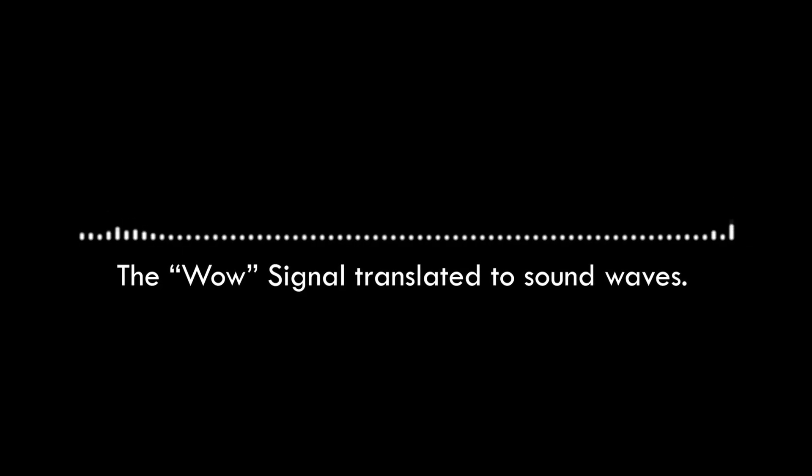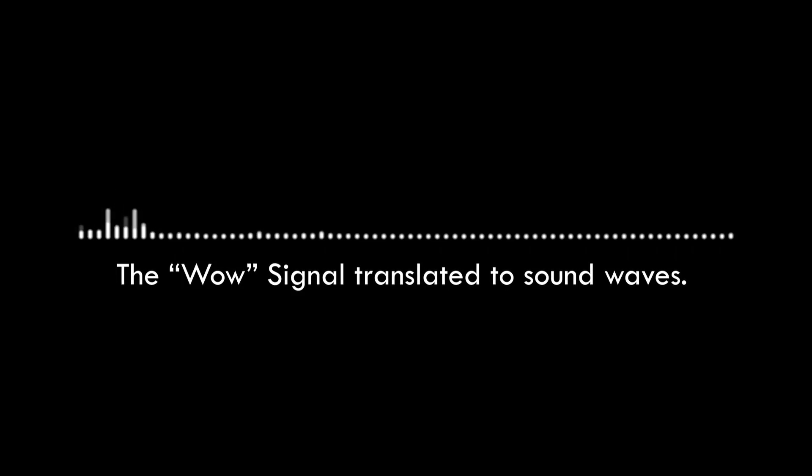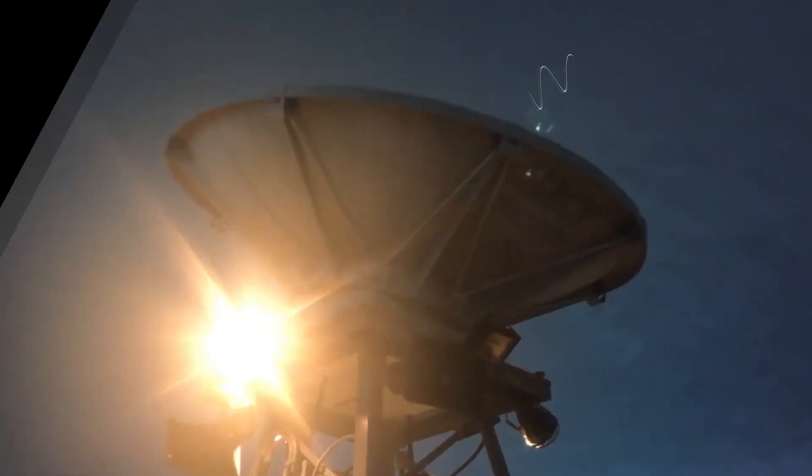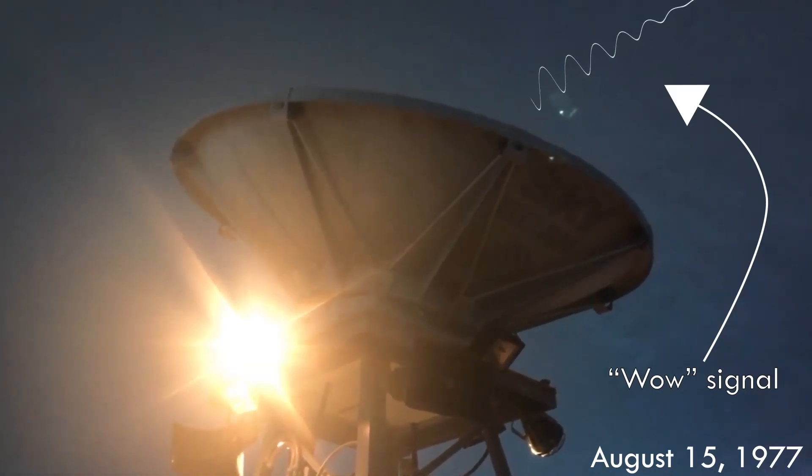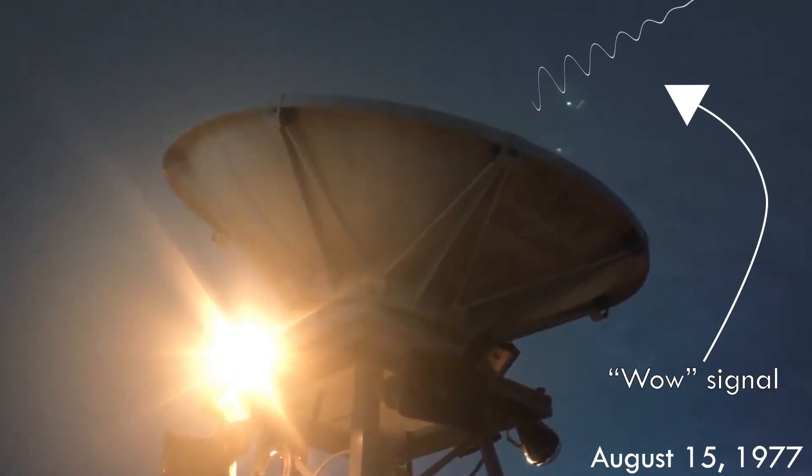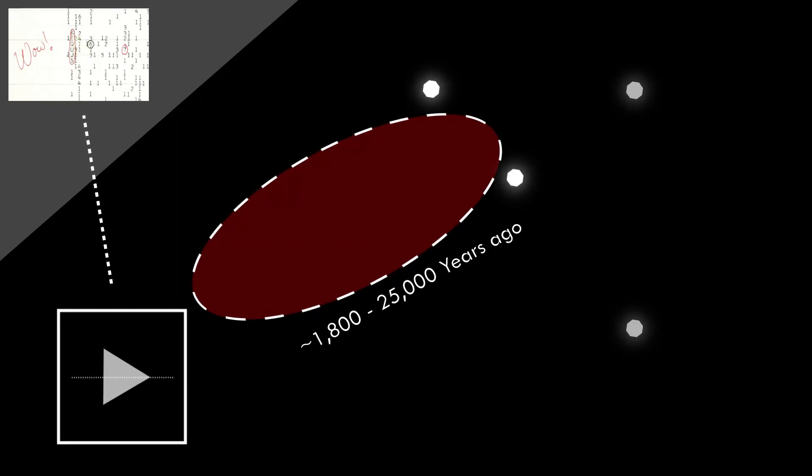What you are hearing right now was a radio signal received by the Big Ear Radio Telescope on August 15, 1977. This particular frequency that was received that day is dubbed the WOW signal, and is, even to this day, one of the leading signs of the existence of extraterrestrial life. It lasted a full 72 seconds and is theorized to have originated in the direction of the constellation of Sagittarius centered between two stars. This would indicate that the radio signal that was received was at least 25,000 years old.